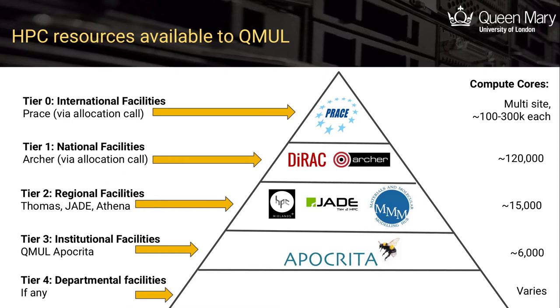The top tiers, such as Archer and Prace, require submitting much more formal requests for use, and we do have some Queen Mary researchers that use these resources for massive workloads.